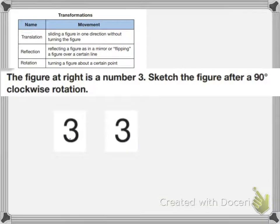So the types of transformations we have are translation, which is sliding it; reflection, which is mirroring or flipping it; and rotation, which is turning it.